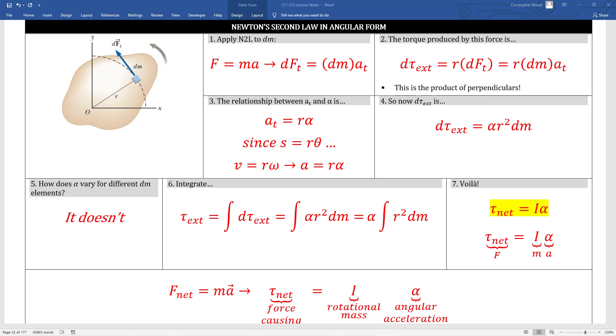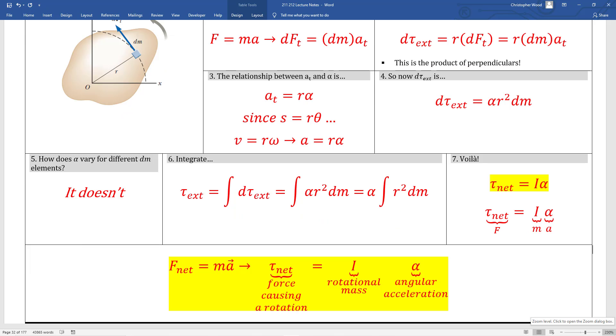Boxes 1 through 7 are going to lend a lot of insight, so go through them carefully. So you have two ways of looking at torque. Torque is the product of perpendiculars and also torque equals rotational inertia times angular acceleration. Just to really stress their symmetry one more time, F equals MA is analogous to tau equals I-alpha.